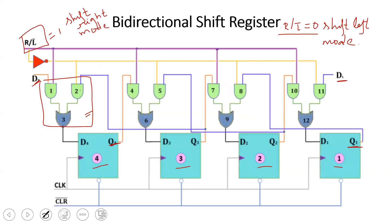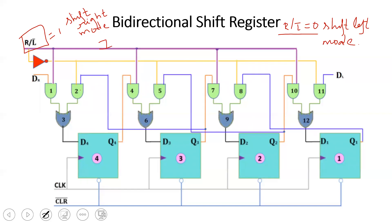In shift-right mode, the control input is 1. The purple line carries this 1 and is connected to gates 1, 4, 7, and 10. Because one input of these gates is 1, they are enabled. The yellow line is 0, so gates 2, 5, 8, and 11 are disabled — their output is 0. So in shift-right mode, gates 1, 4, 7, and 10 are enabled.